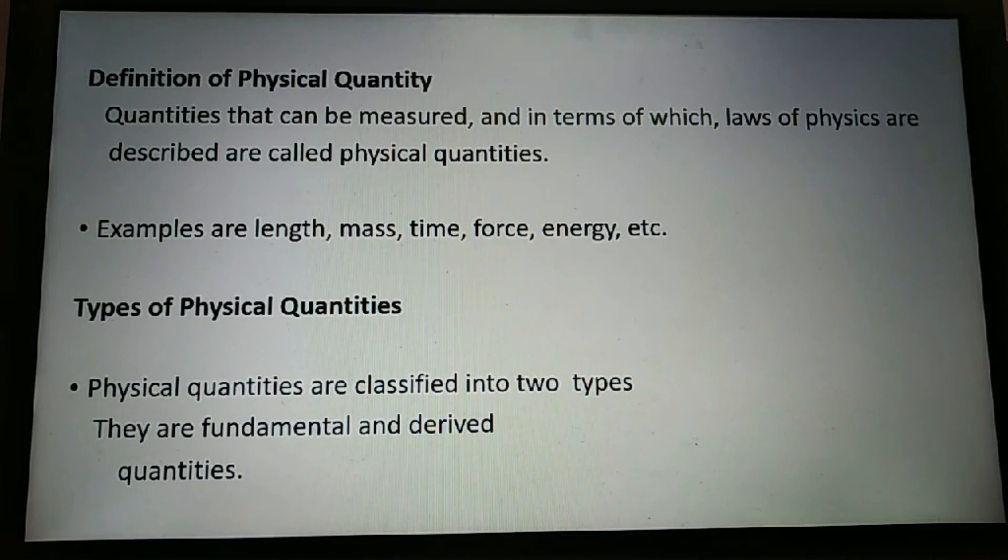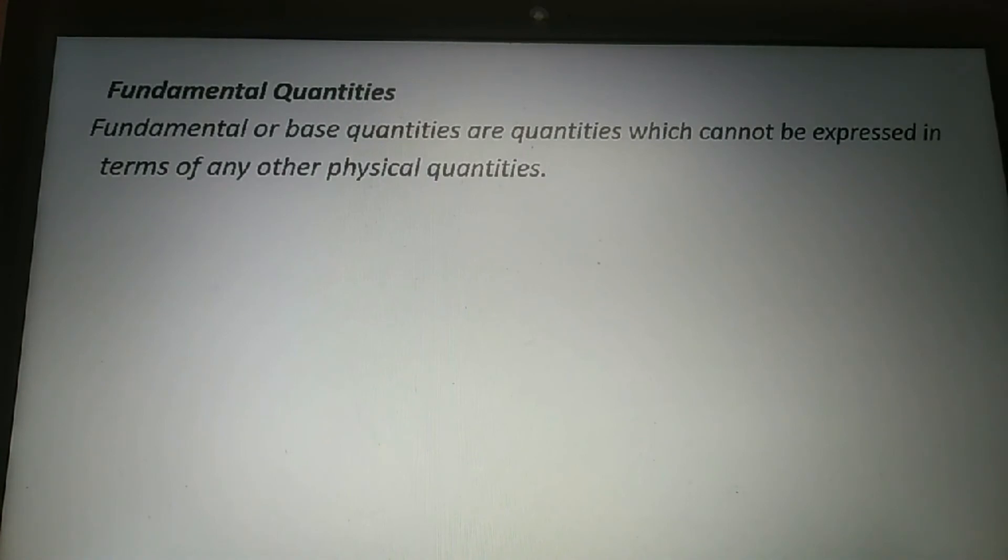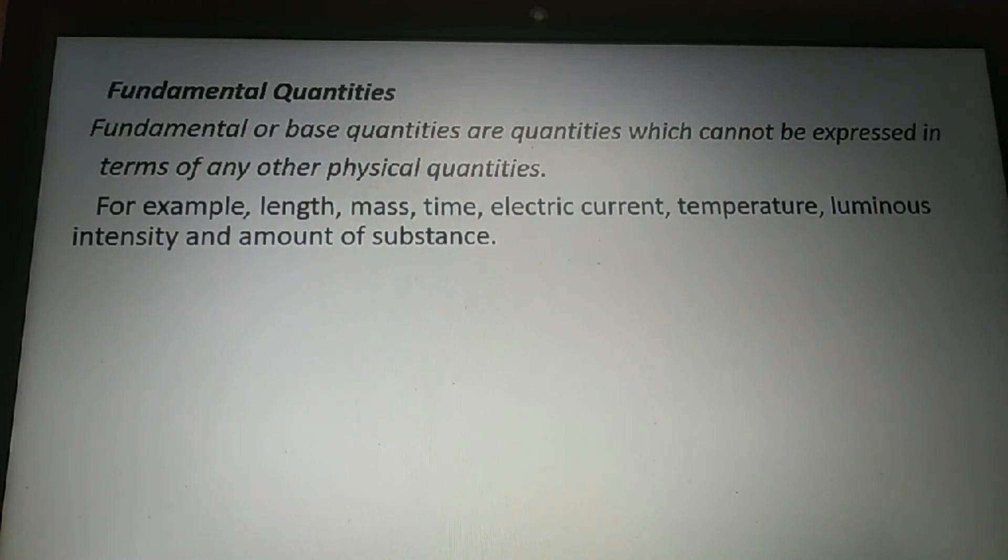Types of physical quantities. Physical quantities are classified into two types: fundamental quantities and derived quantities. Fundamental quantities or base quantities are quantities which cannot be expressed in terms of any other physical quantities. For example: length, mass, time, electric current, temperature, luminous intensity and amount of substance.